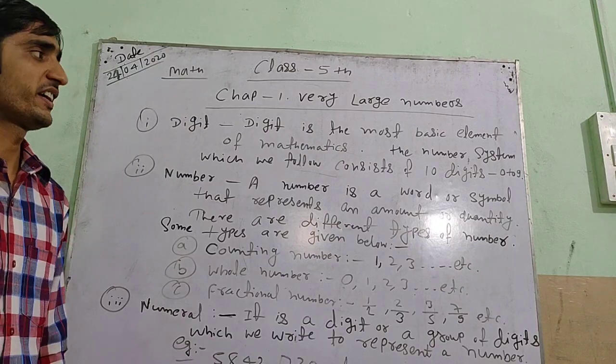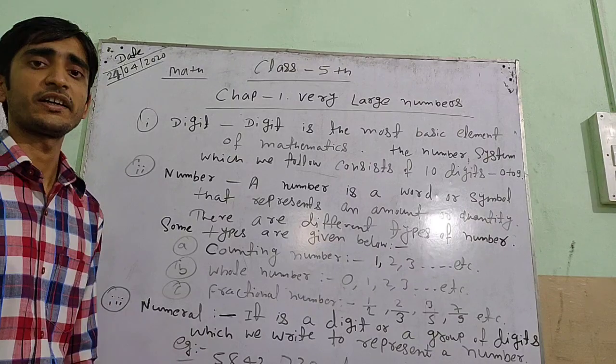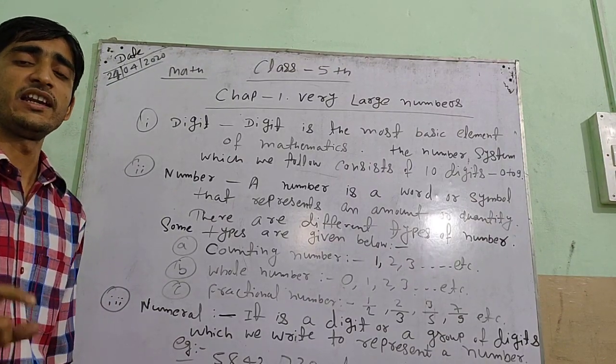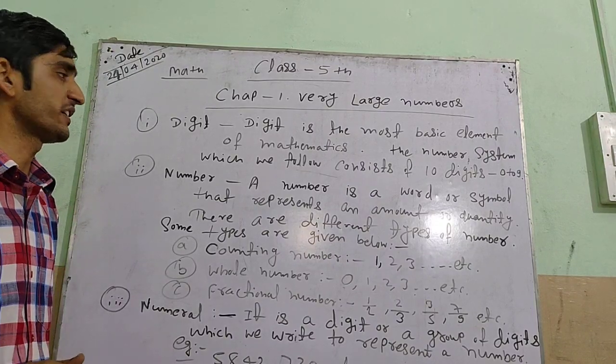The number system which we follow, there are 10 digits. 10 digits are 0 to 9. Mainly digits are 10, which are 0 to 9. These are 10 digits.